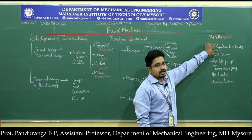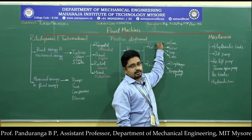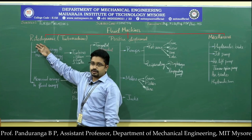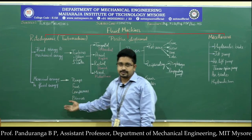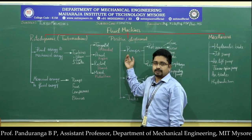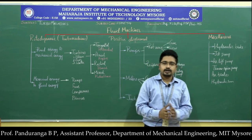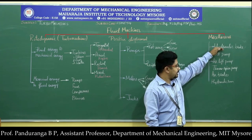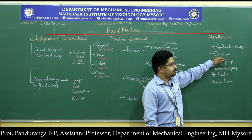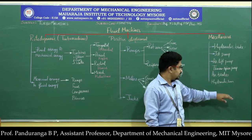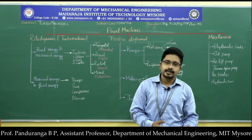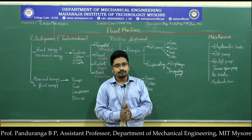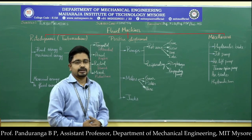Finally, there are miscellaneous machines where the fluid flow is neither purely rotary nor positively contained in the way that fits the other two categories. Examples include hydraulic brakes, air brakes, jet pumps, air lift pumps, thermosiphon pumps, and hydraulic rams. These are the classifications of fluid machines — turbo machines, positive displacement machines, and miscellaneous machines — where fluid energy and mechanical energy are interconverted.